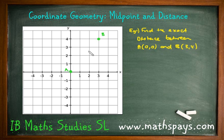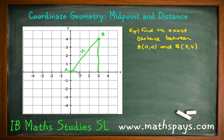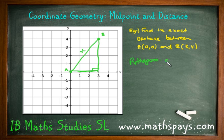Basically what I'm going to be doing is sketching a line here connecting these points. I want to find this exact distance. Hopefully you remember this from years 9 and 10. We can form a right-angled triangle there and we're going to be using our Pythagoras rule. A squared plus B squared equals C squared — or we could say C is equal to the square root of A squared plus B squared.